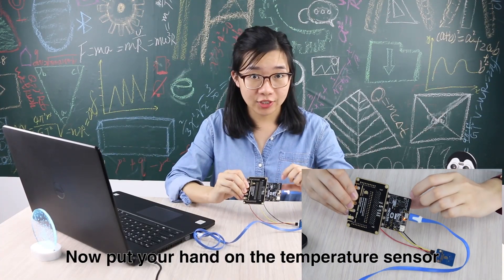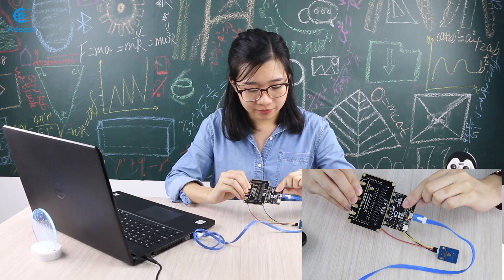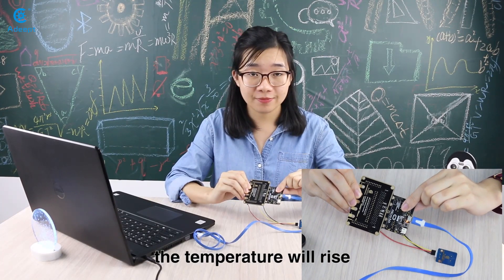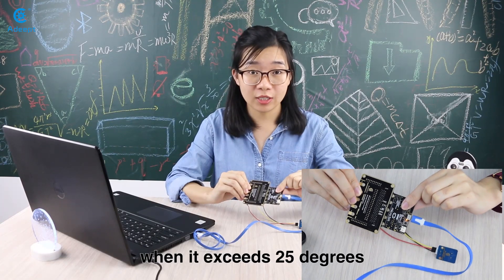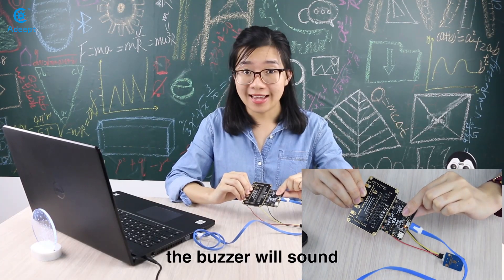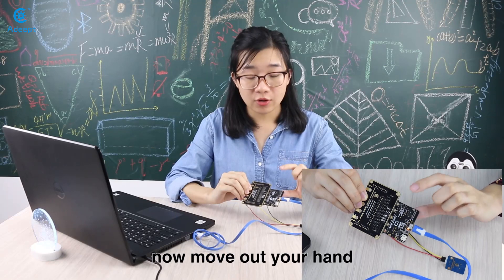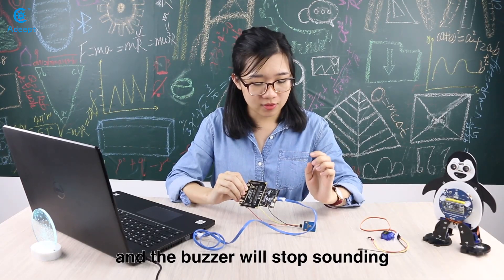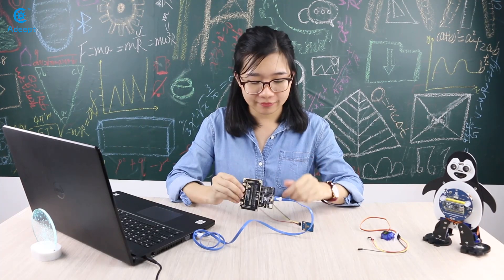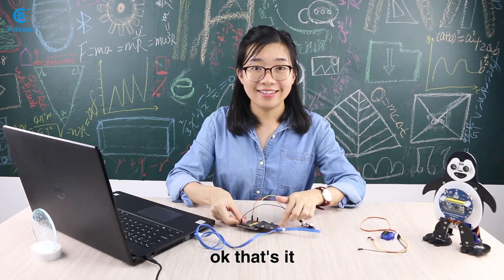Put your hand on the temperature sensor. The temperature will rise. When it exceeds 31 degrees the buzzer will sound. Now move away your hand, the temperature will slowly drop down and the buzzer will stop sounding. OK, that's it.